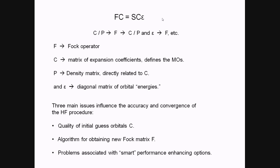There are three basic factors which influence the accuracy and speed of convergence of a Hartree-Fock calculation. One is the quality of your initial guess orbitals, so the closer you start to the solution, the faster it will converge, and it will ensure convergence to the correct solution rather than an incorrect one or just failing to converge at all. Second, there's the choice of algorithm for taking you from your guess towards the solution and for generating new Fock matrices. And finally, there are some problems associated with smart performance enhancing options in Q-Chem that can be turned off.